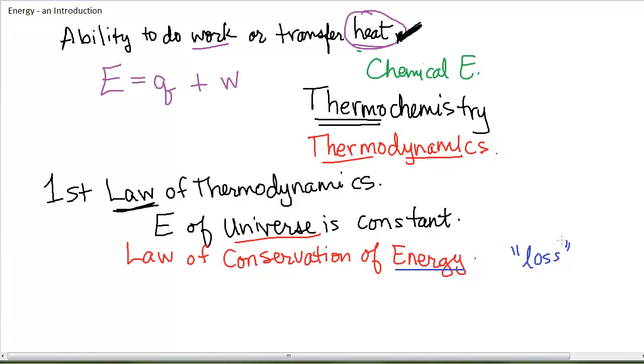So the word lost should not be used in reference to talking about energy changes, but you will hear it sometimes. It doesn't refer to the energy poofing out of existence because that doesn't happen. It refers to the fact that some of the energy is no longer usable or in a form that is able to be used to provide work for something. So the first law of thermodynamics says that the energy of the universe is constant. It's also referred to as a law of conservation of energy. You can't create energy. You can't destroy energy. Energy has to come from somewhere and has to go somewhere.